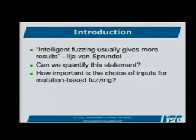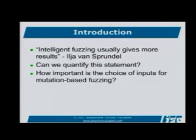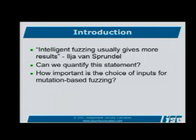One of the founding fathers of fuzzing has this quote in his paper: 'intelligent fuzzing usually gives more results.' That totally makes sense and everyone knows it's pretty much true, but the question is, how much more? Because doing intelligent fuzzing is just an order of magnitude harder to do than dumb fuzzing, and so the question becomes: is it worth your time to do the intelligent fuzzing or not? That's what I kind of wanted to find out.